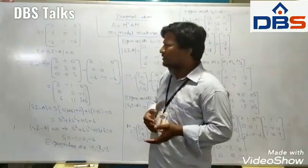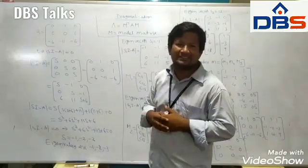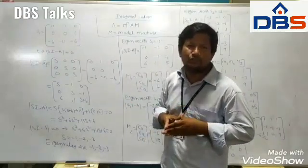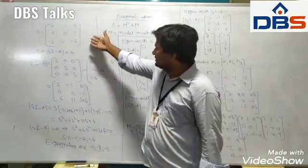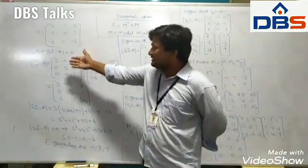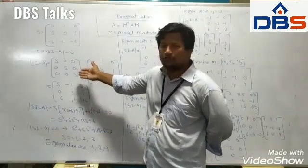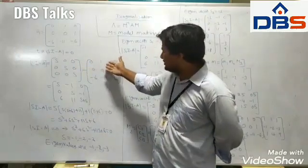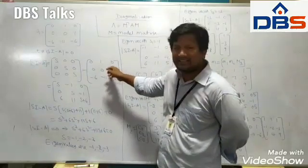First of all, the characteristic equation of the system matrix is |sI - A| = 0. This is a 3×3 matrix, so sI is s times the identity matrix [1 0 0; 0 1 0; 0 0 1], minus A which is [0 1 0; 0 0 1; -6 -11 -6].